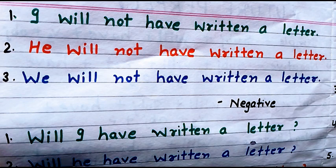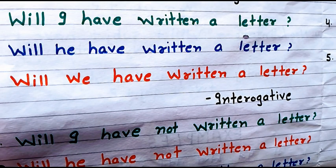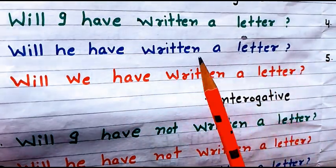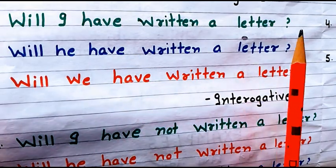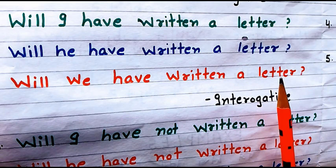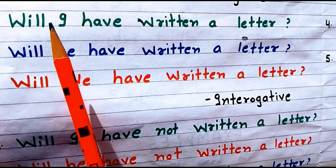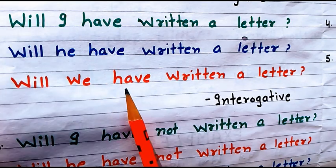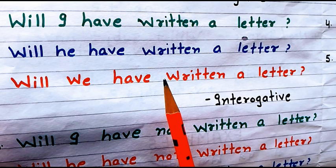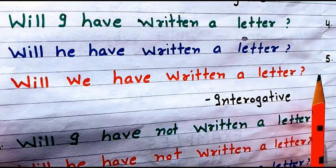Next example is interrogative. The rules of interrogative: how do we form sentences? 'Will I have written a letter?' 'Will he have written a letter?' 'Will we have written a letter?' With the help of rules, we form interrogative sentences: first helping verb 'will', then subject, then 'have', then verb's third form, then object, and last we put the question mark in writing.